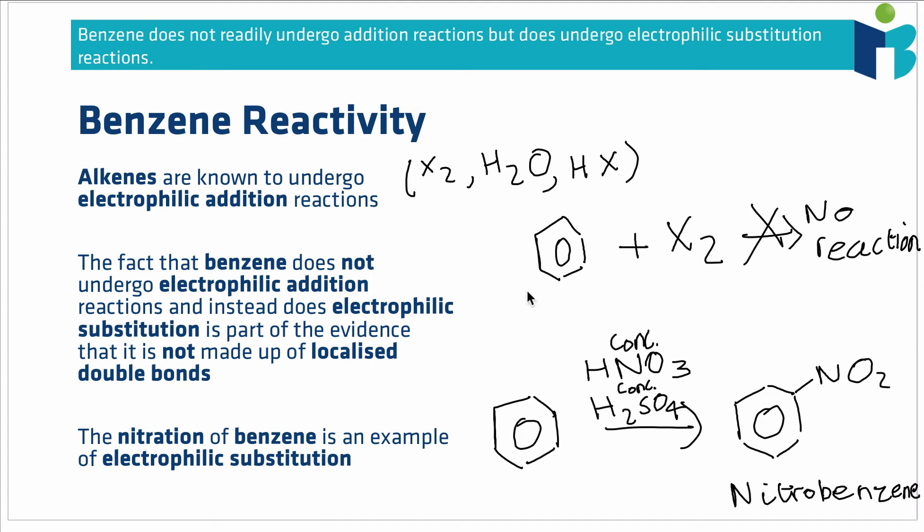The mechanism for this is not required, but you do need to know that when you react benzene with nitric and sulfuric acid, you get these nitrobenzene compounds, whereas they do not react with traditional electrophiles used for electrophilic addition.